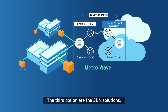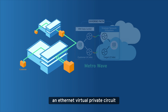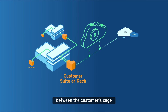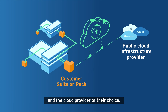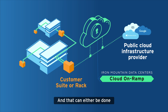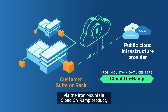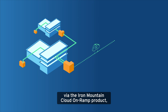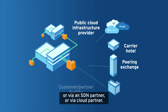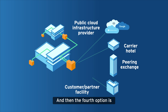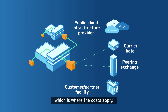The third option is the SDN solutions, where we'll build an Ethernet virtual private circuit between the customer's cage and the cloud provider of their choice. That can either be done via the Iron Mountain cloud on-ramp product, via an SDN partner, or via a cloud partner. The fourth option is to exchange that traffic over the internet, which is where the costs apply.